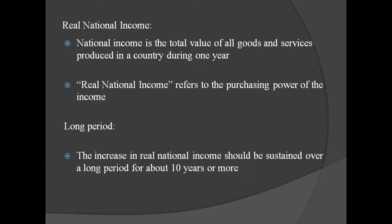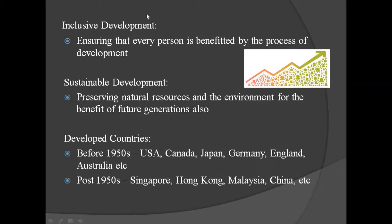To improve economic welfare, we have to include all sections of society. That is why two important words came: inclusive development and sustained development. Inclusive development means ensuring that every person is benefited by the process of development — every person in the society is included and benefited. That is inclusive development.